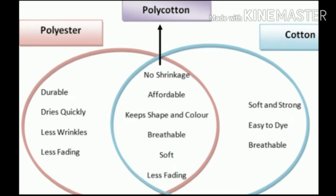See the chart now. Polyester is a synthetic fiber, cotton is a natural fiber, and polycotton is a blended fiber. The properties of polyester are: durable, dries up quickly, less wrinkles, and less fading. Polycotton resembles polyester — no shrinkage, affordable, keeps shape and color, breathable, soft, and less fading. Cotton is soft and strong, easy to dye, breathable, and preferred to wear in summer.